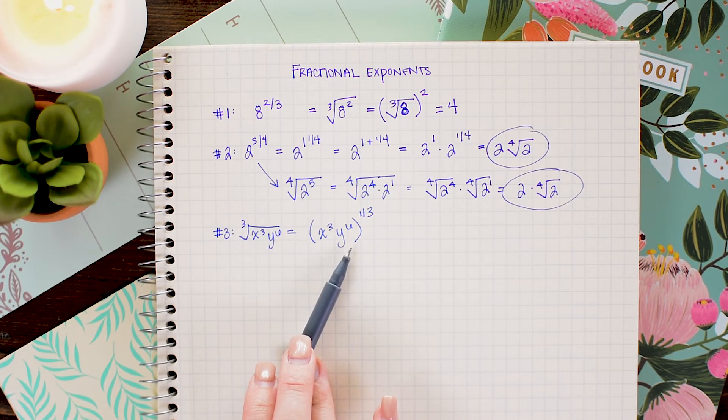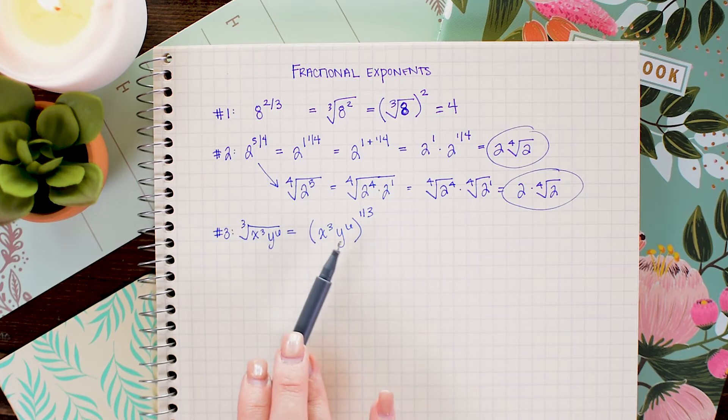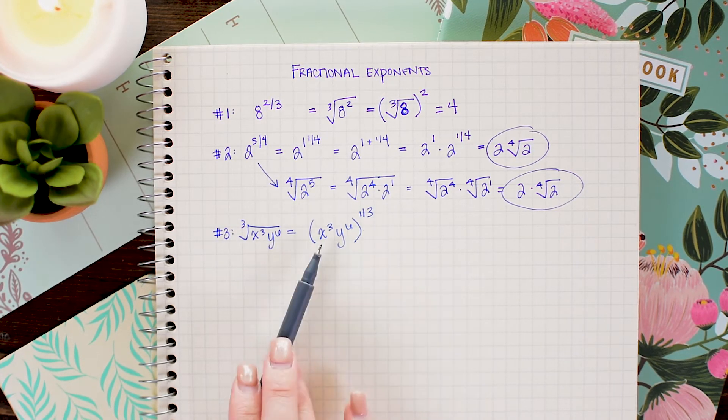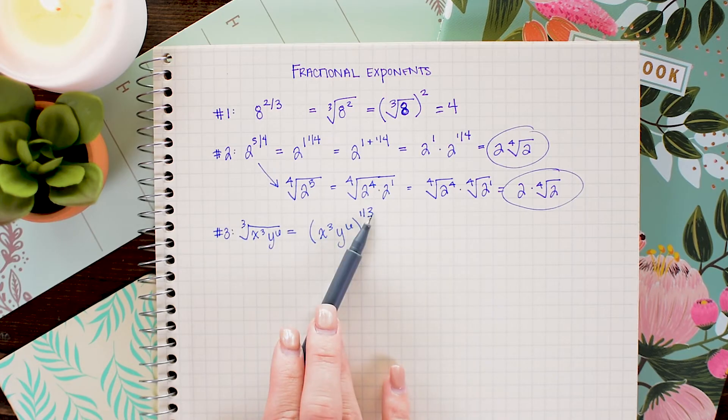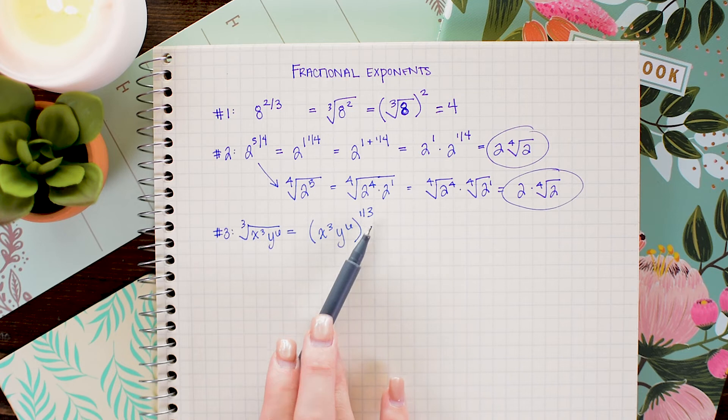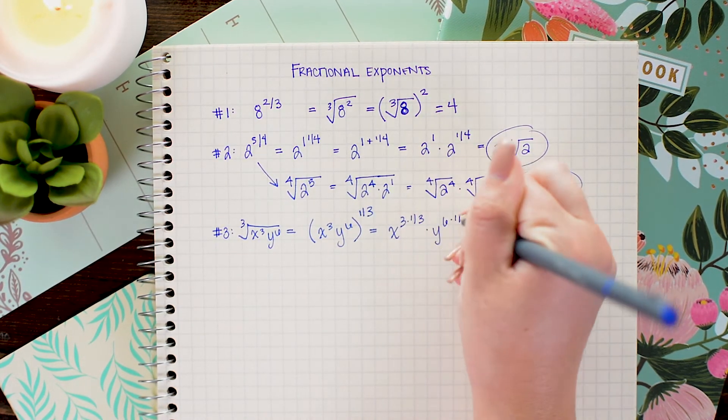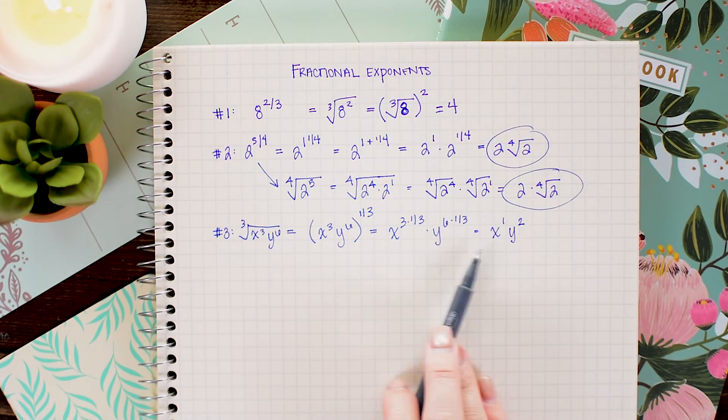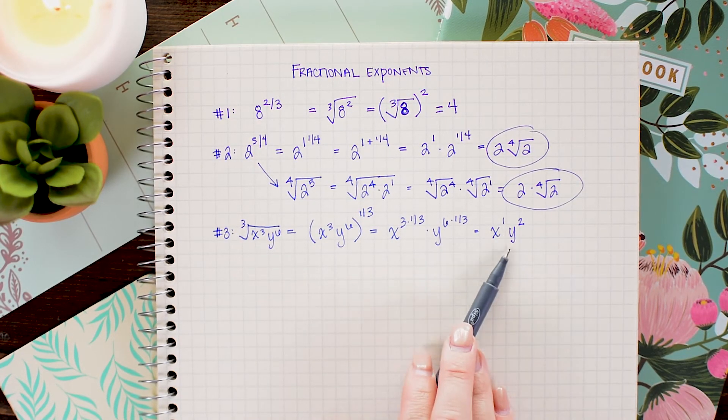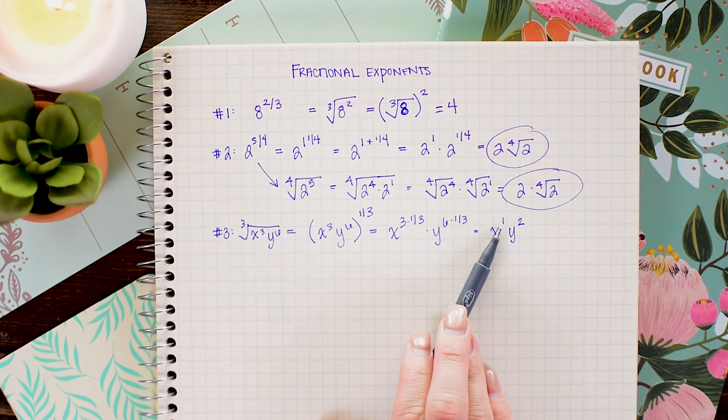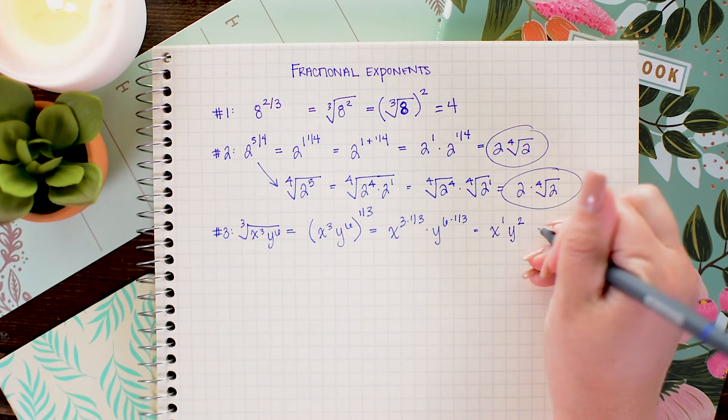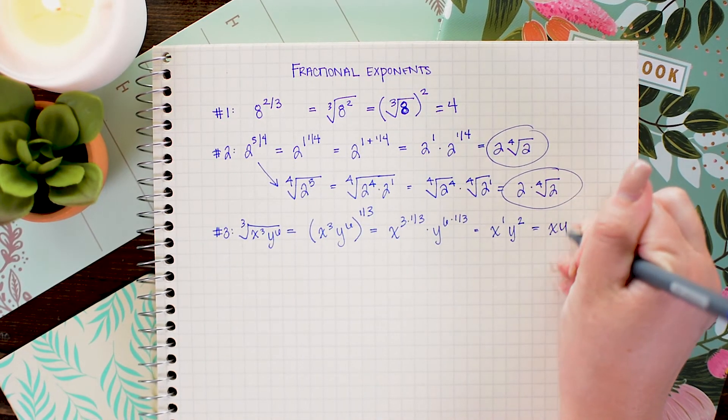From here, we are free to just use our exponent rule that says when we have a power raised to a power, we multiply. So I'm going to multiply 3 times 1 third for the new power on the x and I'm going to multiply 6 times 1 third to get the new power on the y. There I get x to the first y squared. Of course, I don't need to write this power of 1 so this can be rewritten as just x y squared.